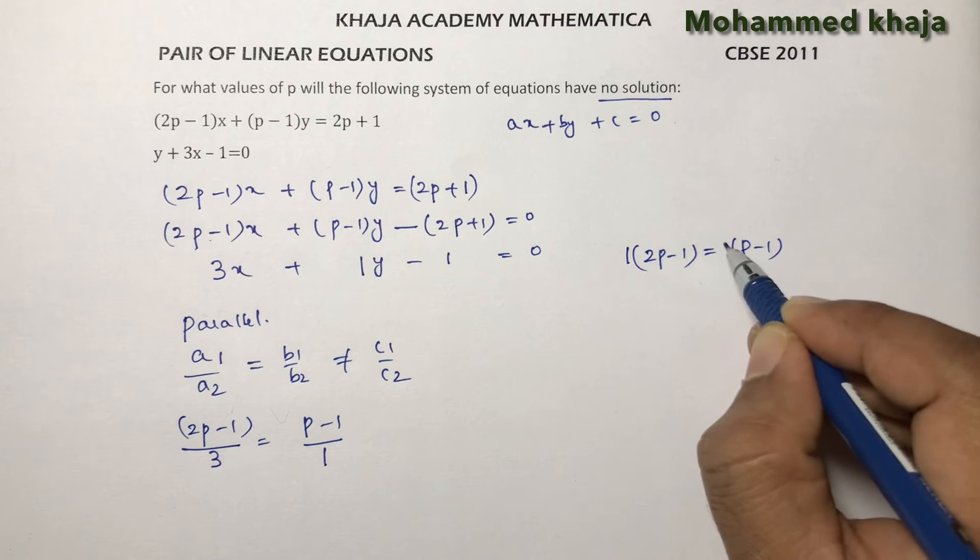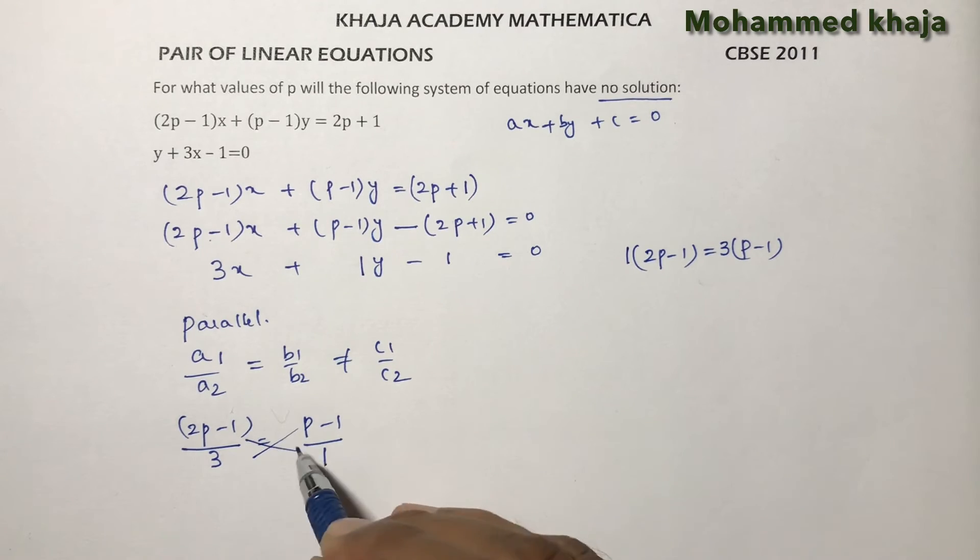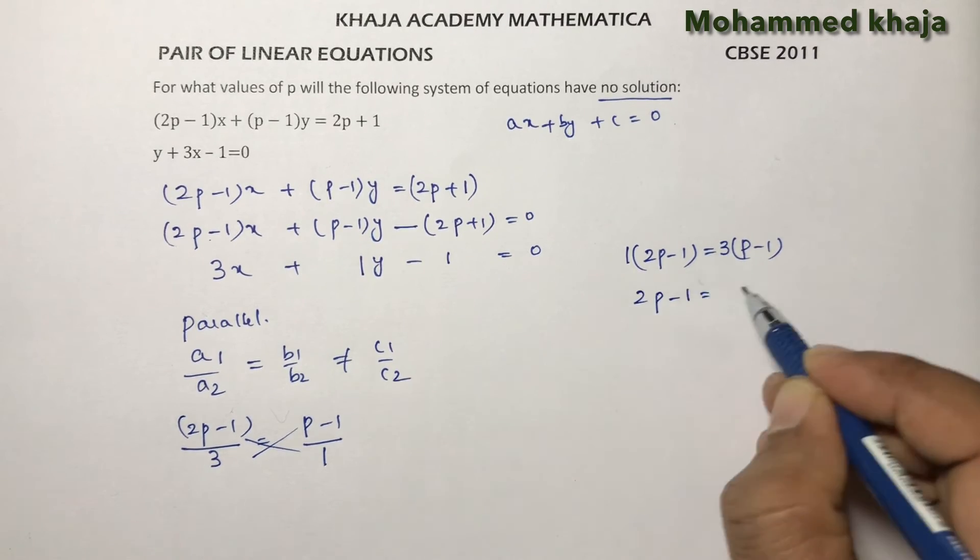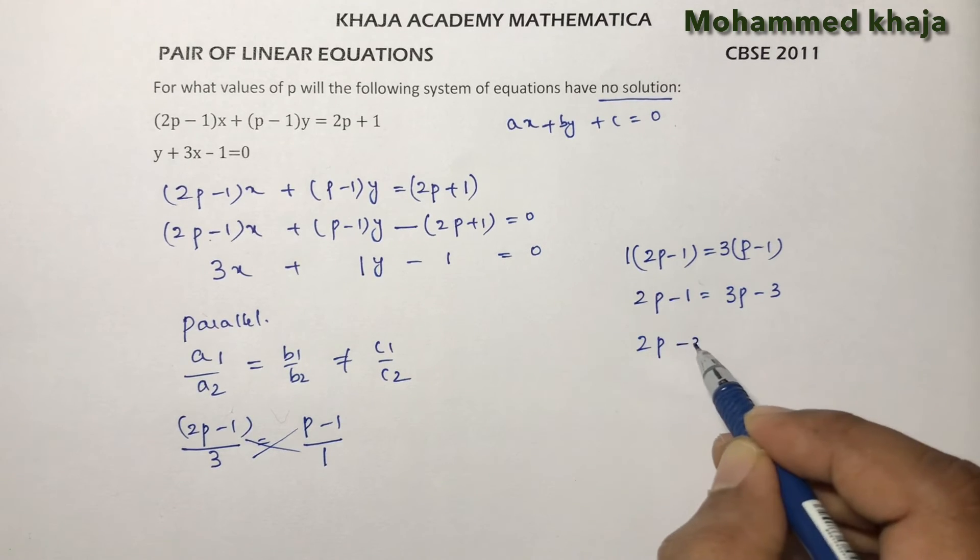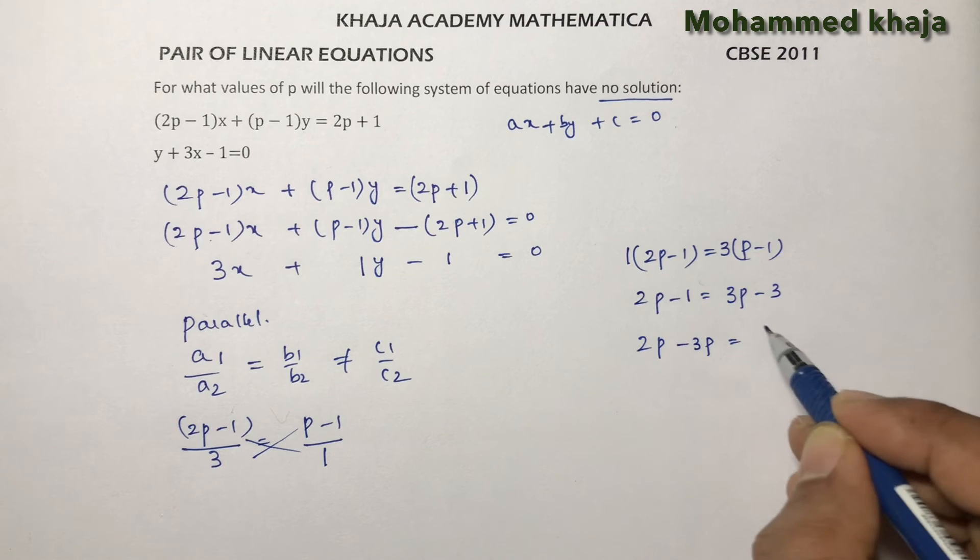If we cross multiply next here, 2p - 1 = 3p - 3. Transposing, -3 + 1.